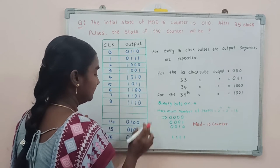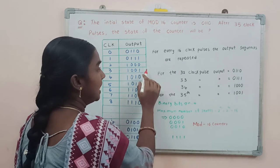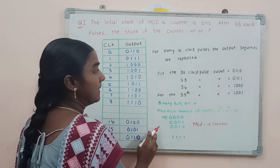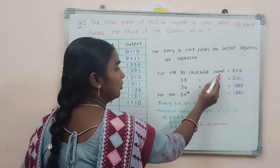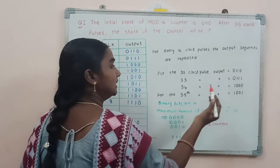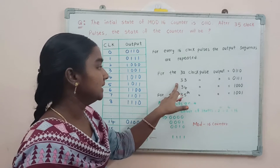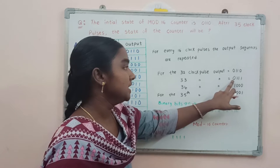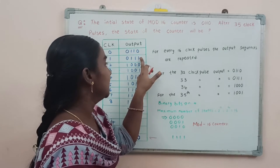For every 16 clock pulses the output sequences repeat. So at every multiple of 16 — for the 32nd clock pulse, the output is the initial sequence 0110. For the 33rd clock pulse, the next sequence is 0111.